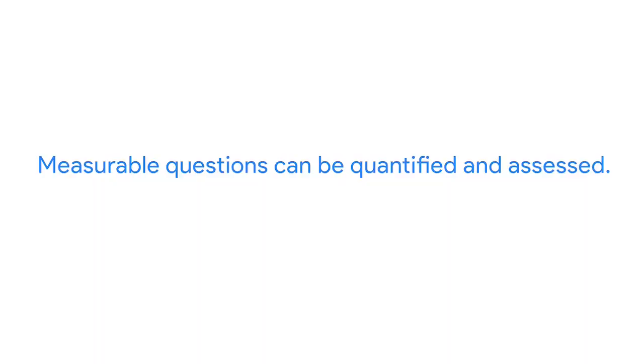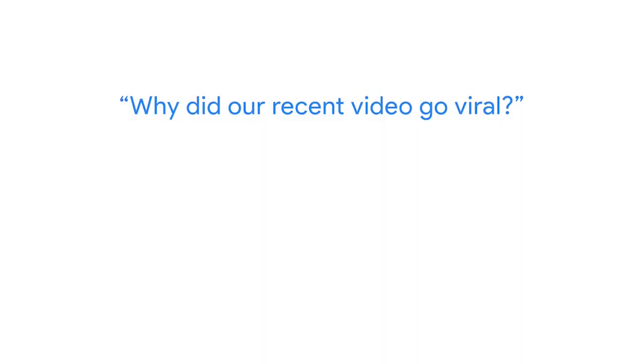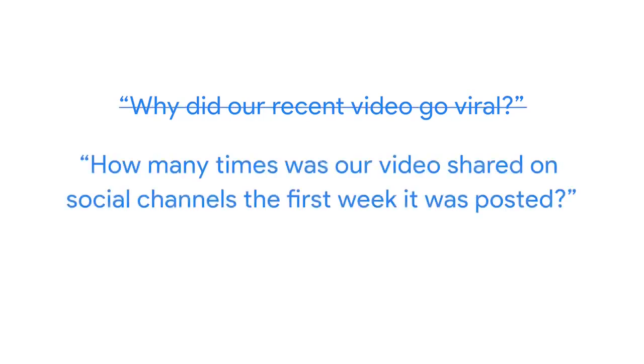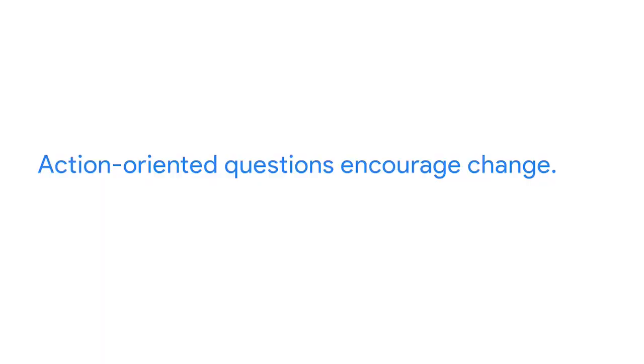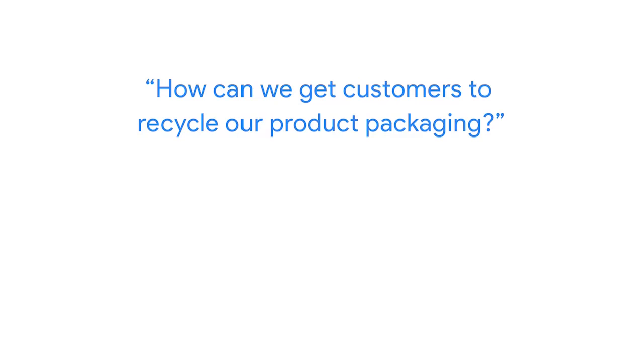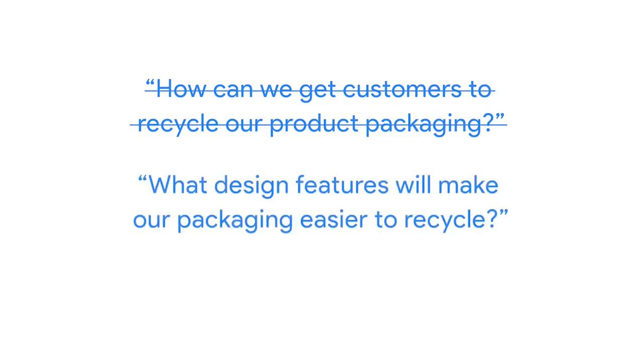Measurable questions can be quantified and assessed. An example of an unmeasurable question would be 'Why did our recent video go viral?' Instead, you could ask 'How many times was our video shared on social channels the first week it was posted?' — that question is measurable because it lets us count the shares and arrive at a concrete number. Action-oriented questions encourage change. Rather than asking 'How can we get customers to recycle our product packaging?' you could ask 'What design features will make our packaging easier to recycle?' This brings you answers you can act on.